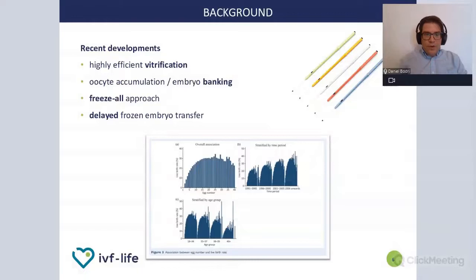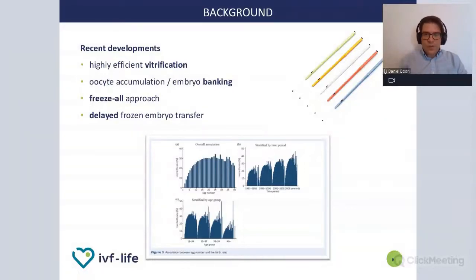I'd like to call your attention to this interesting graph from the publication of Sunkara and colleagues. This registry-based dataset from the UK asked what is the best number of eggs to achieve optimal chances of live birth, and it turned out to be around 15. Basically, as the number of available eggs increases during ovarian stimulation — whether one cycle or several cycles — the chances of achieving a live birth also increase. I'd particularly call your attention to the steep part of this graph: especially for a low responder patient, there's a big difference if one, two, three, four, five, six, or seven eggs are obtained, because the chances of achieving a live birth increase quite quickly.